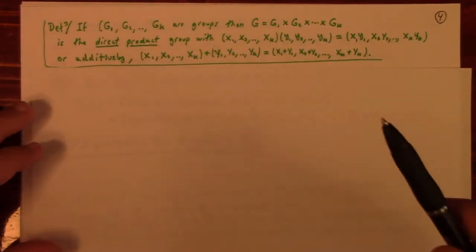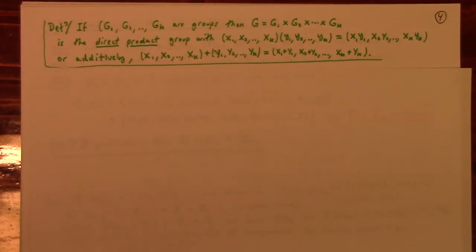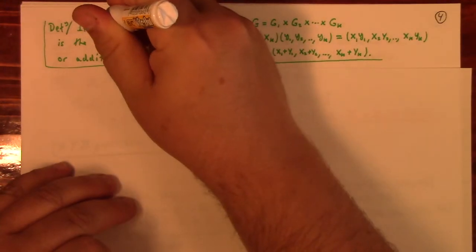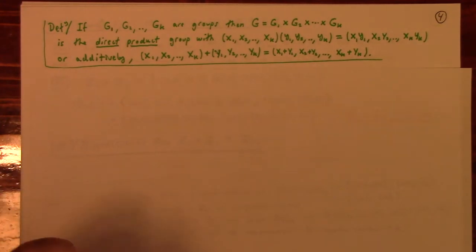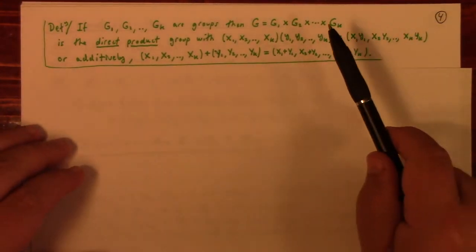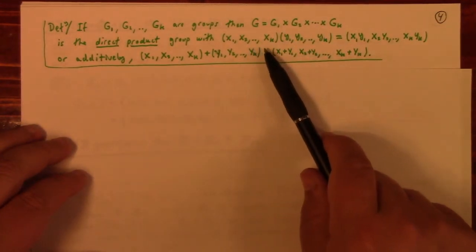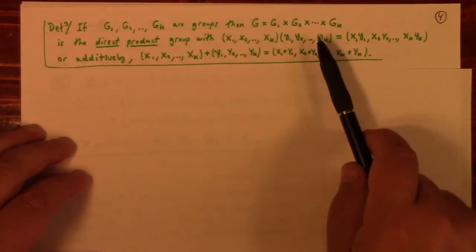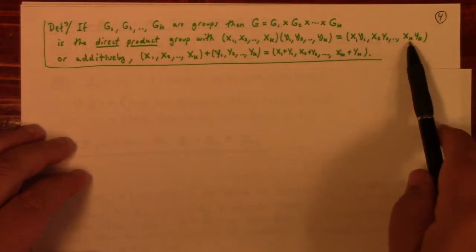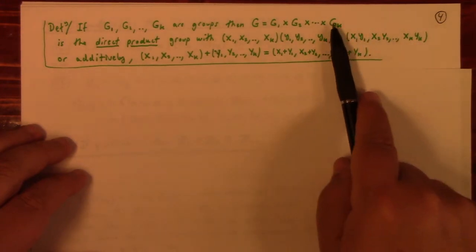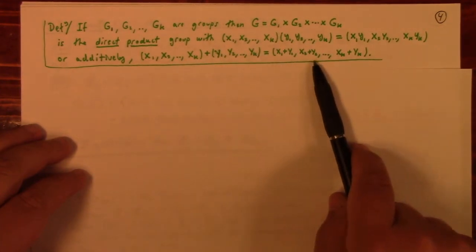The other thing we need to understand is the direct product of groups. If G_1 through G_k are groups, then the direct product is their Cartesian product as sets, and multiplication is defined component-wise: you multiply the first components according to the rule in G_1, the second components according to G_2, and so on. Or if you have additive groups, you add component-wise.